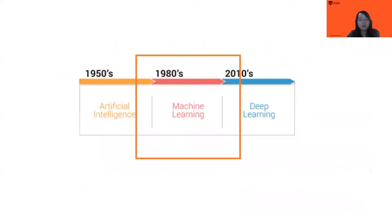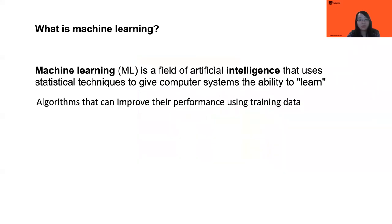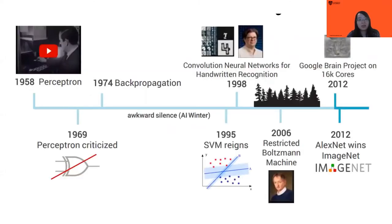Back to today's topic, focused on machine learning — I want to introduce mainly three different types of machine learning techniques. From Wikipedia, machine learning is a field of artificial intelligence that uses statistical techniques to give computer systems the ability to learn — algorithms that can improve their performance using training data. In other words, machine learning is a method of data analysis that can automate analytical model building.